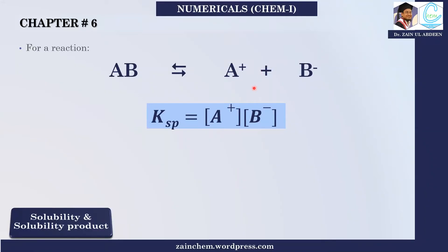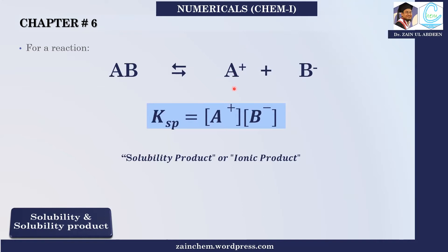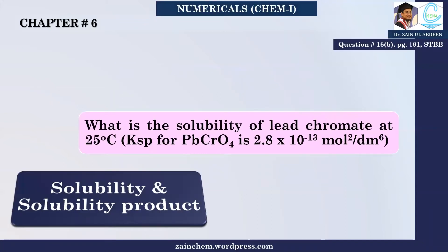If you take the product of ion concentrations — the product of ion concentrations of the dissolved ions — that is called the Solubility Product. You can also call it the Ionic Product.